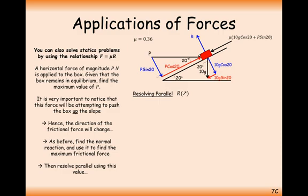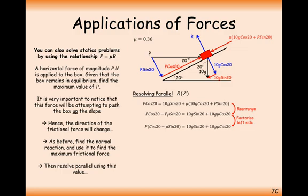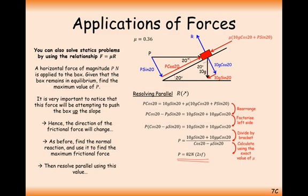Resolving forces up and down the slope: friction is acting down the slope with the 10g sin 20 force. The only force acting up the slope is P cos 20. Setting P cos 20 equal to the two downward slope forces, expand the brackets and move P terms to the same side, factorise out P, then divide. Using the coefficient of friction as 0.36, we get P equals 82 newtons, accurate to two significant figures.